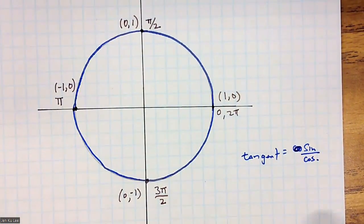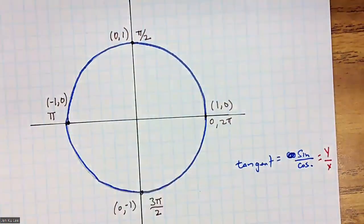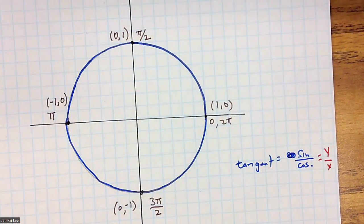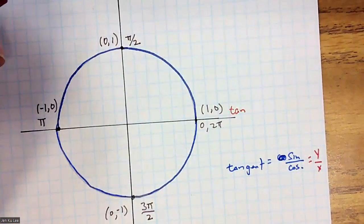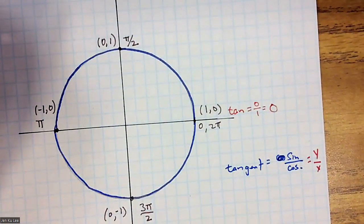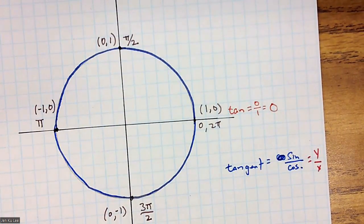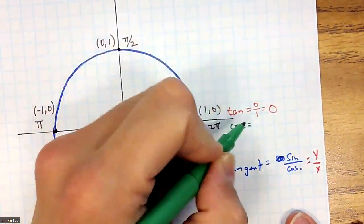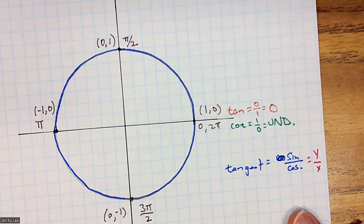I'm going to get the tangent value in red. Essentially, tangent is going to equal y over x, because your y value is your sine function and your x value is your cosine function. So y over x — tangent at 0 and 2π is 0 over 1, which is just 0. And I'm going to get the reciprocal as well, because that is cotangent. The reciprocal of 0/1 is 1/0, which is undefined — you can never have a denominator of 0.